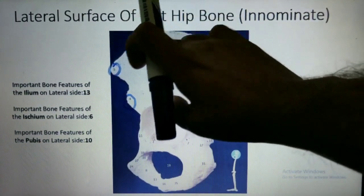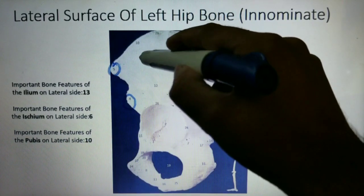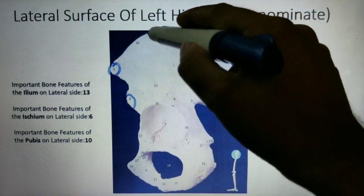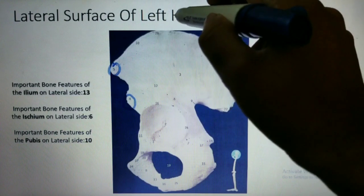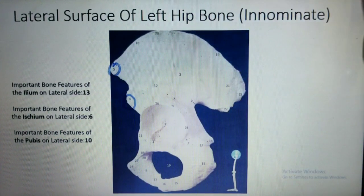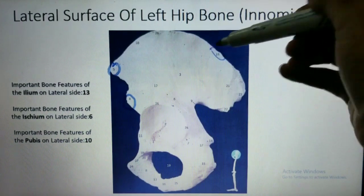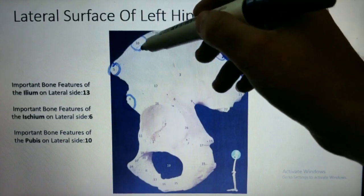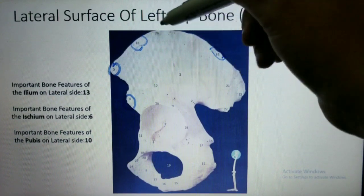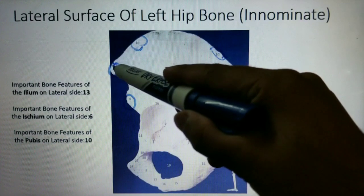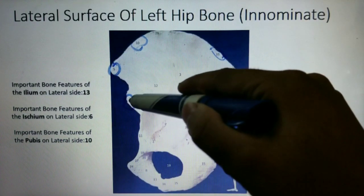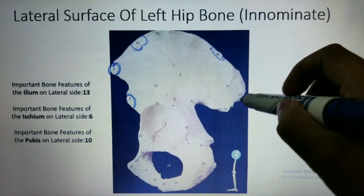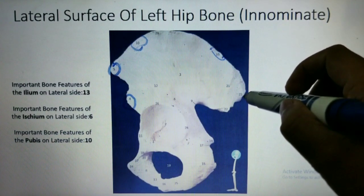You can see number 10 is the iliac crest, while number 28 is the tubercle of the iliac crest — this is a rough surface. The iliac crest and the tubercle of the iliac crest are distinct features. Number 5 is the anterior superior iliac spine, number 4 is the anterior inferior iliac spine, and number 23 is the posterior superior iliac spine.